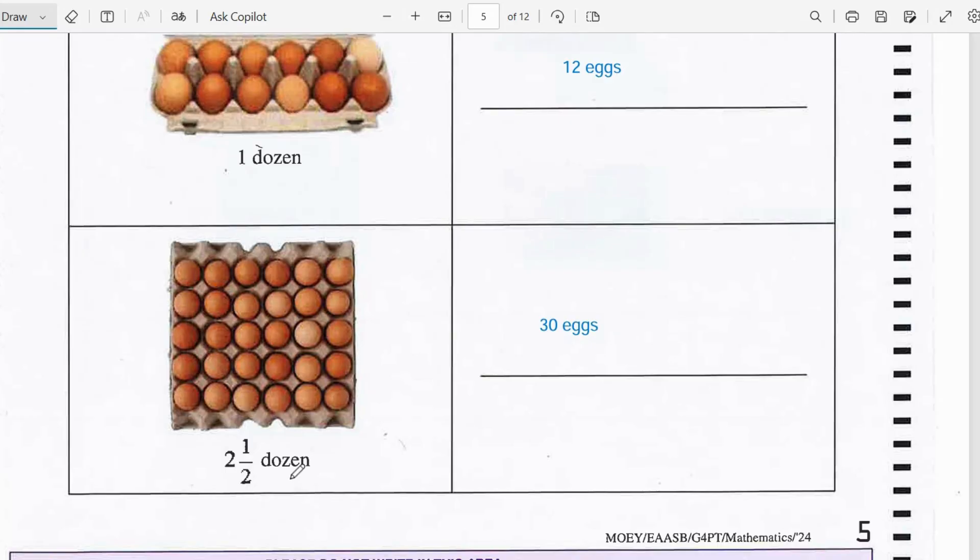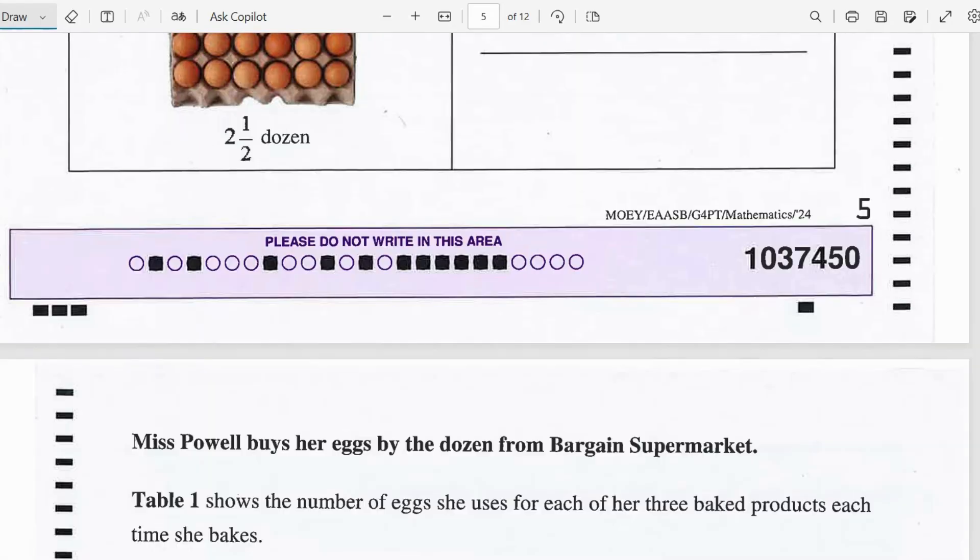If we know that a half of a dozen is 6 eggs and a dozen is 12 eggs, we could add 12 and 12, so that's 24 eggs plus 6, that gives us 30 eggs.